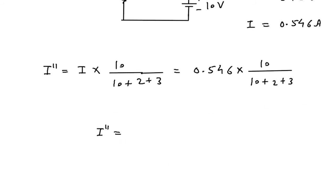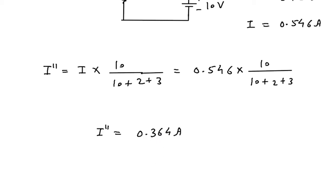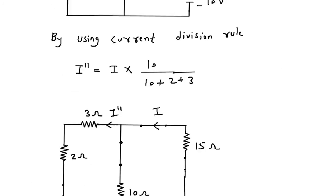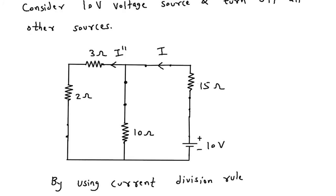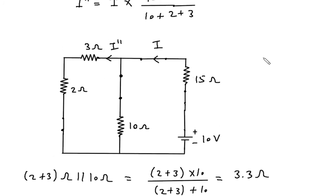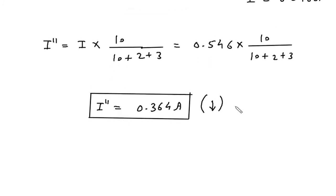I double prime is equal to 0.546 into 10 divided by 10 plus 2 plus 3. So it is 0.364 ampere. The direction of this I double prime is downward through the 2 ohm resistor.